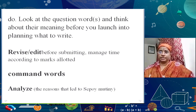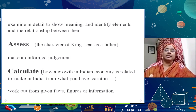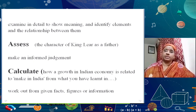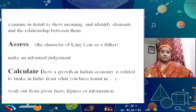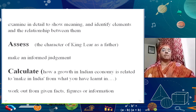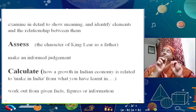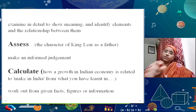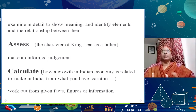Similarly, the next command word is 'assess.' For example: 'Assess the character of King Lear as a father' — this could be a question in your literature paper. What you do with 'assess' is make an informed judgment. Your answer must have some kind of judgment, and this judgment must be informed by the text you are answering. You can also lift a few words or phrases from the text, put them within quotes, and show your examiner that you have made an informed judgment.